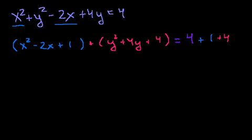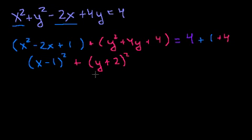And so this becomes (x minus 1) squared plus (y plus 2) squared is equal to 4 plus 1 plus 4 is equal to 9. And there you have it. We have it in the standard form of a circle.